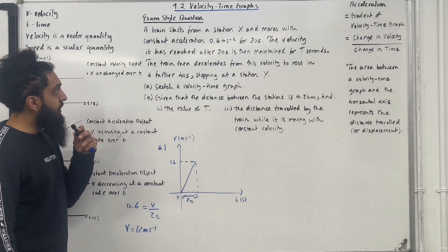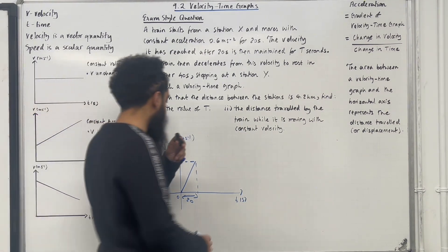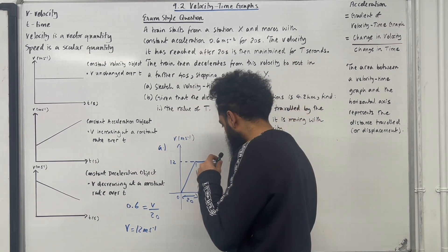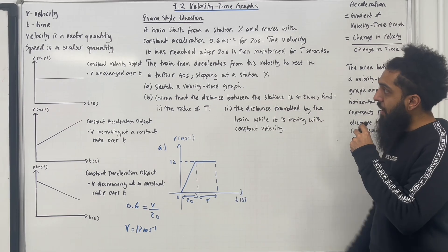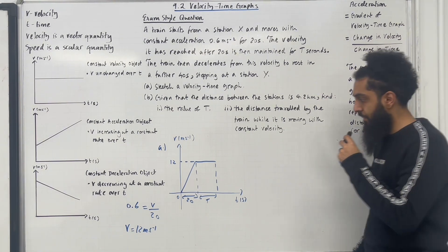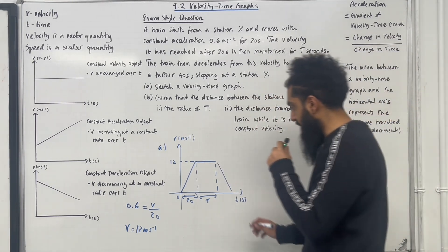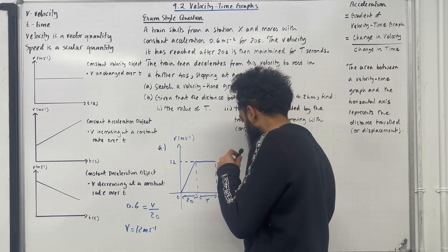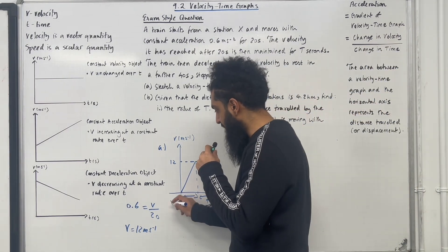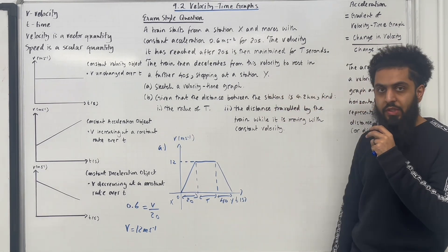The velocity reached after 20 seconds is then maintained for T seconds, so we have a constant velocity for T seconds. The train then decelerates from this velocity to rest in a further 40 seconds, stopping at station Y. Here we have station X at the start and station Y at the end — that is the velocity-time graph.